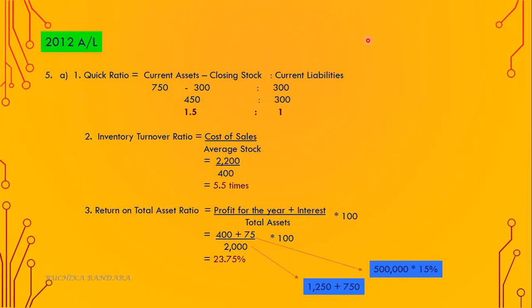Question number 5, A part, number one: they ask for the quick ratio. Quick ratio equals current assets minus closing stock, divided by current liabilities. Your total current asset amount is 750, which is the addition of 300 and 450. Minus closing stock of 300, giving 450, over current liabilities of 300. The ratio is 1.5 to 1.